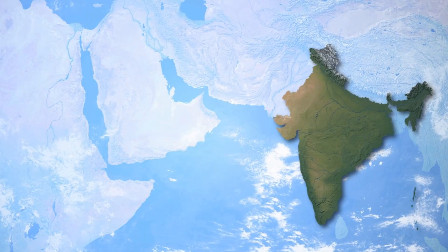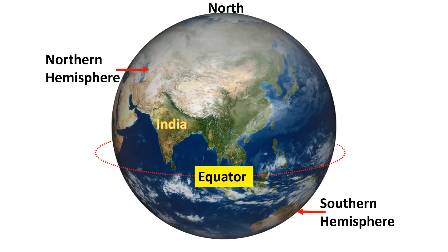Now we are talking about India in terms of geography. India is entirely located in the Northern Hemisphere. The entire country is located north of the equator, placing it fully within the Northern Hemisphere.